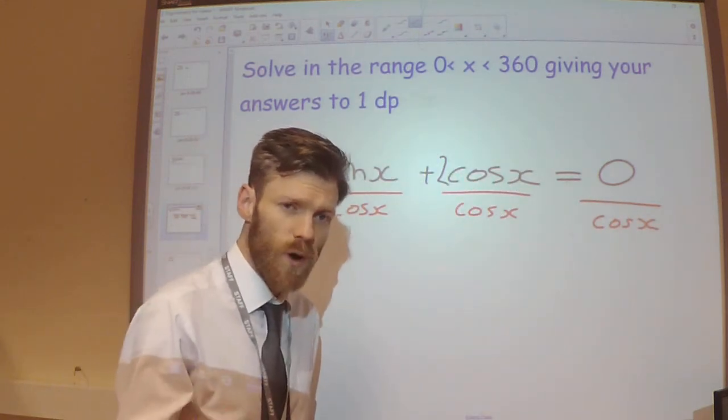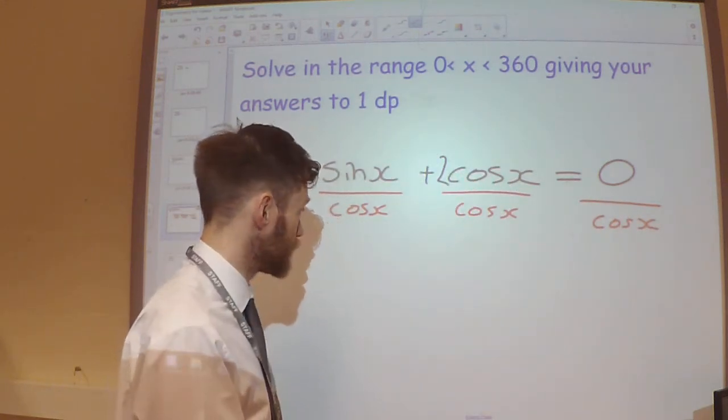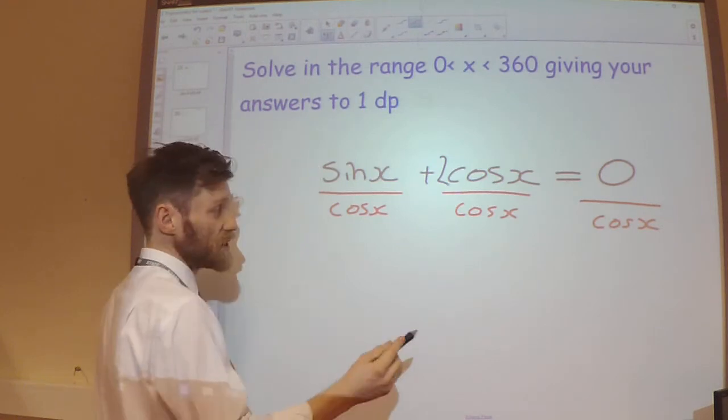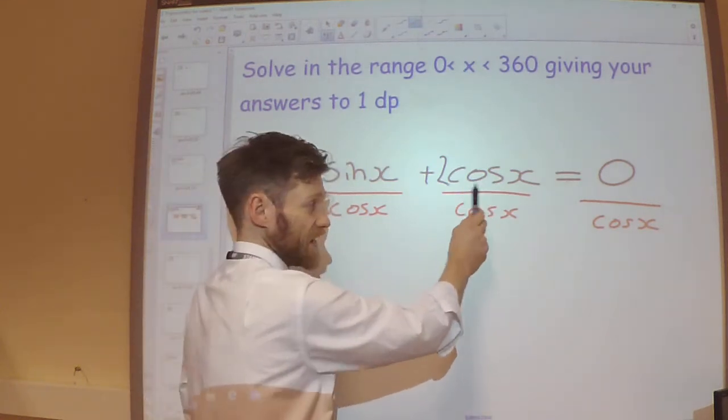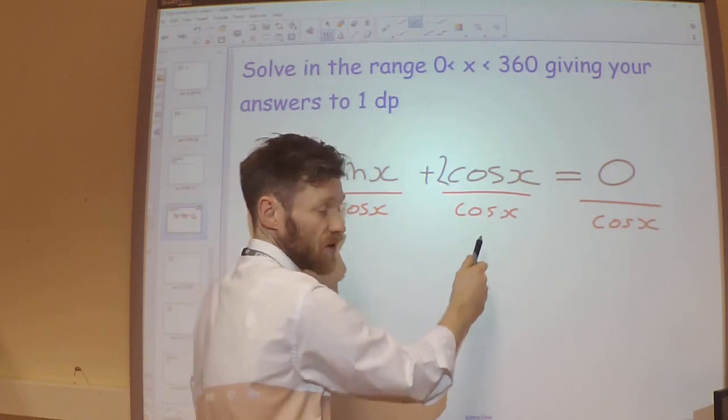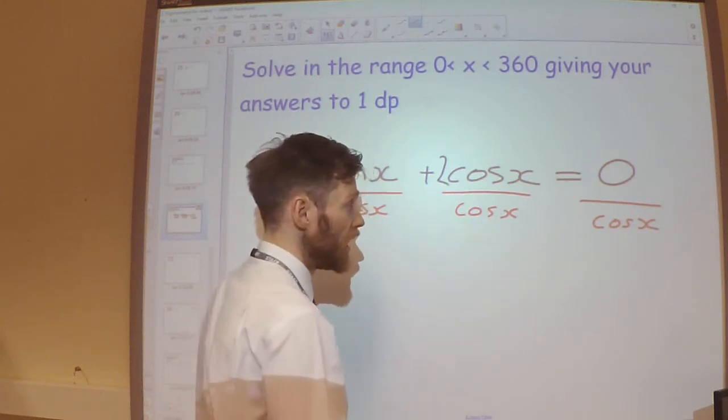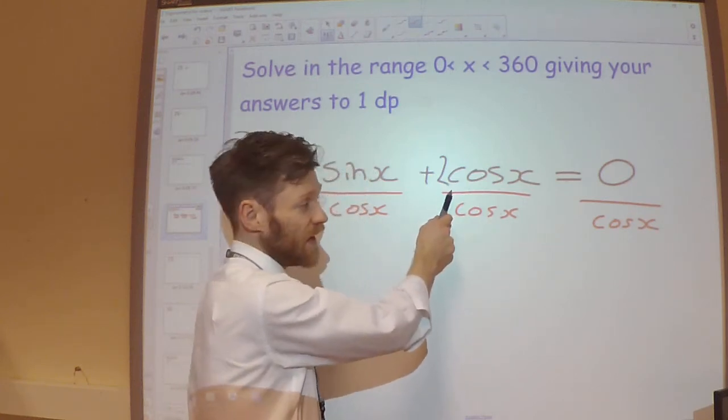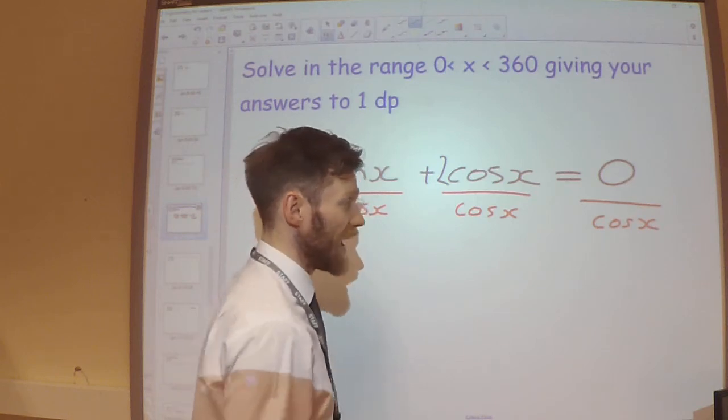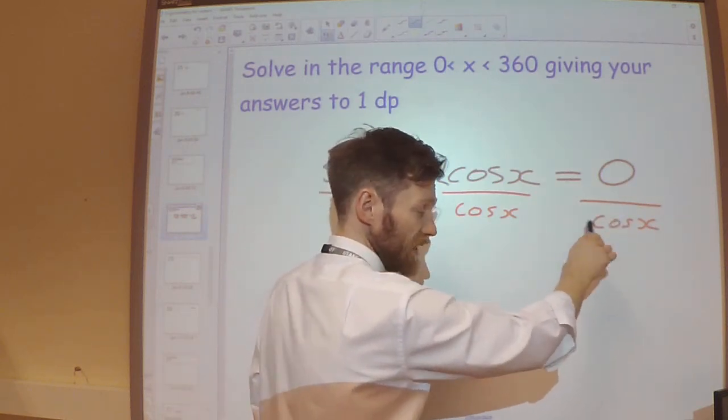And the reason why I've decided to do that is because, first of all, it's going to get rid of this cos x here, because the cos x divided by cos x will just leave me with a 2 here. And over there, it's just going to be 0.